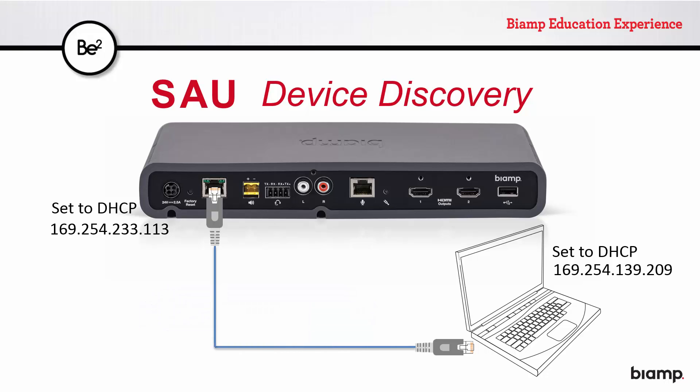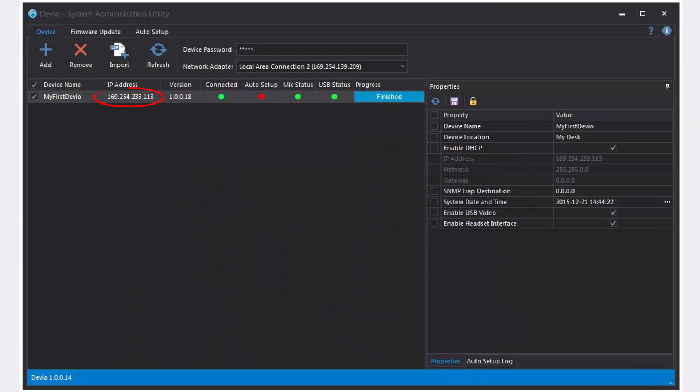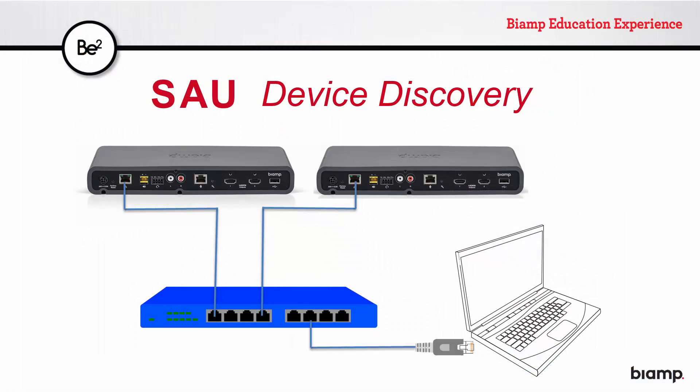This type of communication could also be a possibility by simply connecting a computer's network port directly to the CR1's network port. You can see the device's address and the computer's address here in the SAU. Since I'm connected through a switch, it's possible that I can communicate with more than one device at a time, and I've gone ahead and set up a system just like this, adding a second device to the switch.